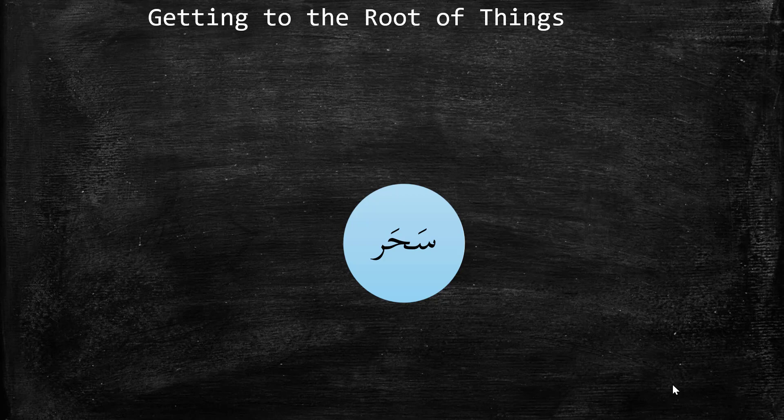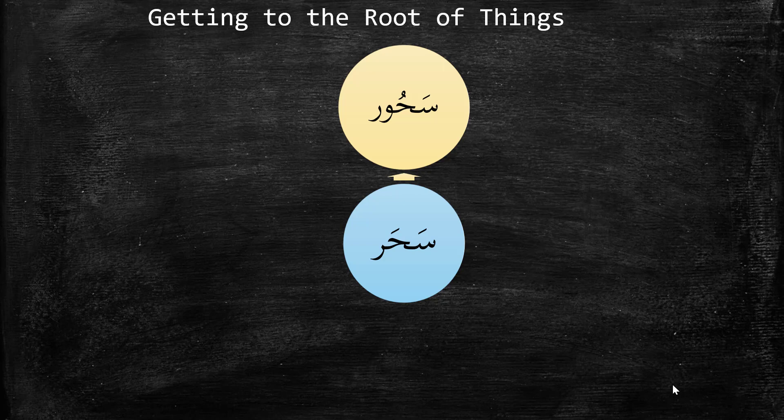That verb is going to be our foundation, or our source, for developing or creating other isms or other nouns. If we look above, we'll see that we have made an addition and we want to look at the changes that happen to the letters. Sahara has become 'Sahur,' and Sahur is an ism.